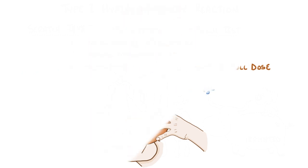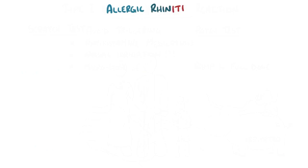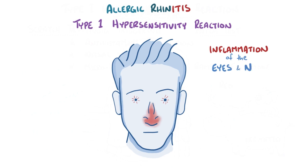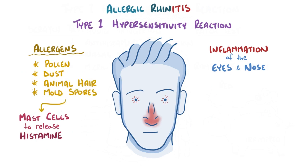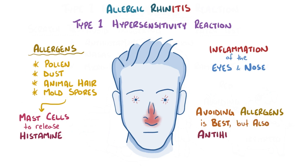As a quick recap: allergic rhinitis is a type 1 hypersensitivity reaction which results in inflammation of the eyes and nose. Airborne allergens like pollen, dust, animal hair, or mold spores cause mast cells in the tissues to release histamine, causing the eyes and nose to get inflamed and watery. Avoiding allergens is the best approach, but it's also possible to use antihistamines, and in severe cases try desensitization to reduce or eliminate the symptoms.